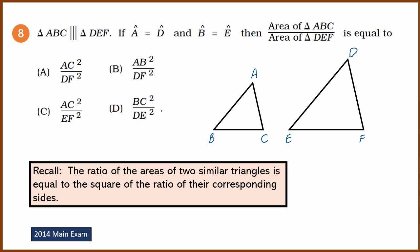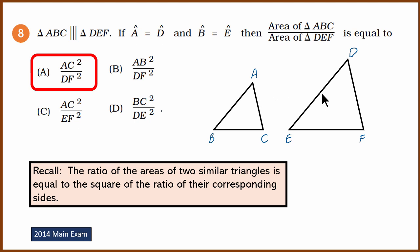You can check the other options to confirm. For example, option B has AB squared over DF squared — but AB corresponds to DE, not DF, so it is wrong. All options except A have mismatched corresponding sides, which is why A is the only correct answer.